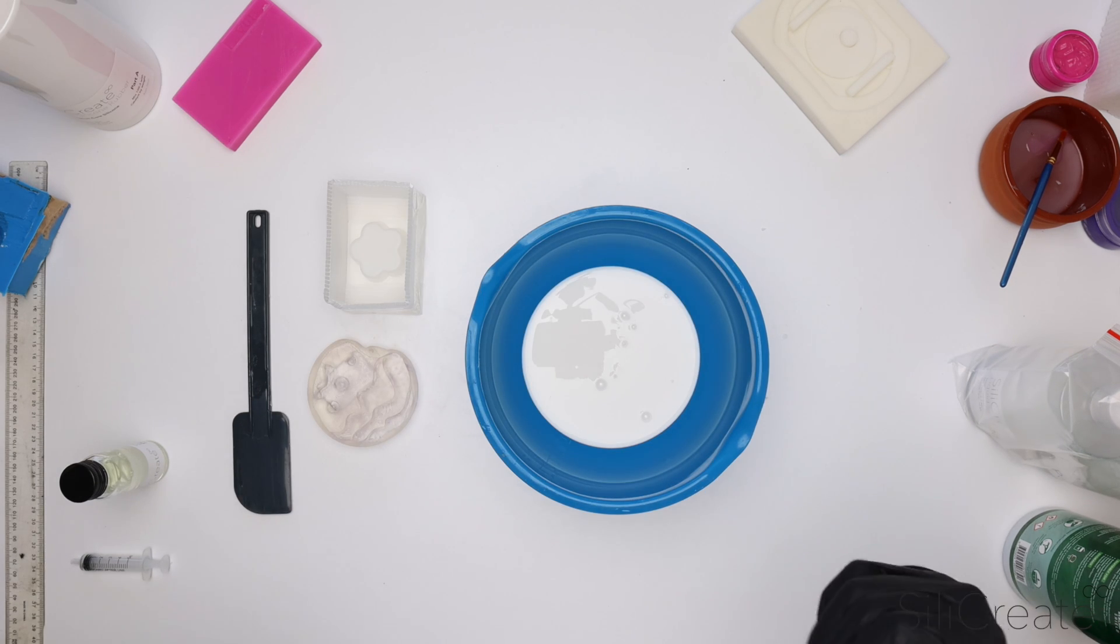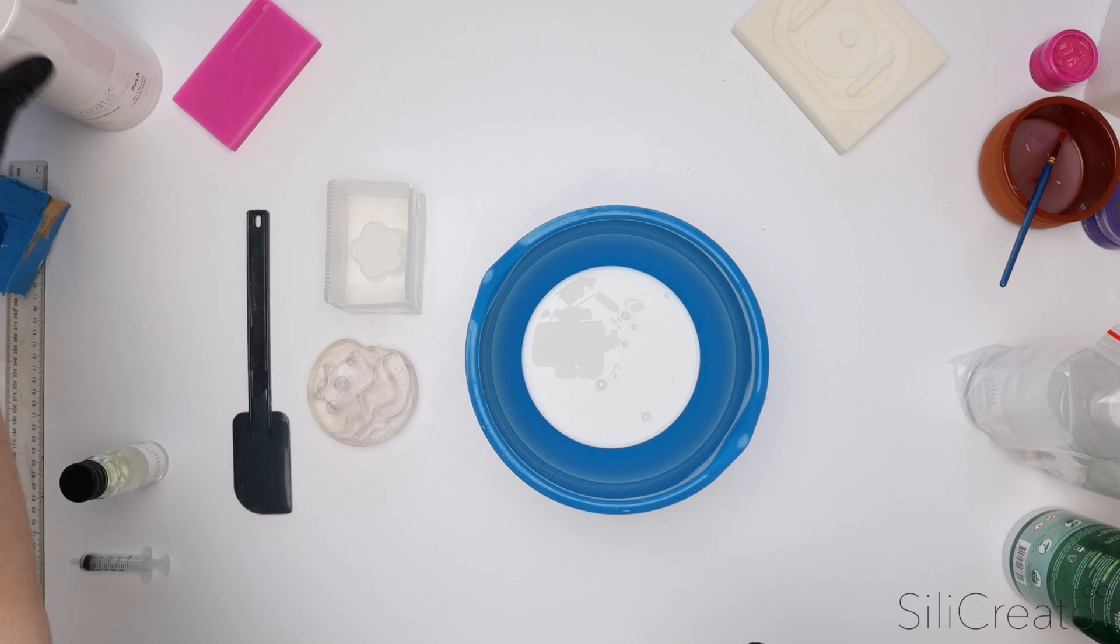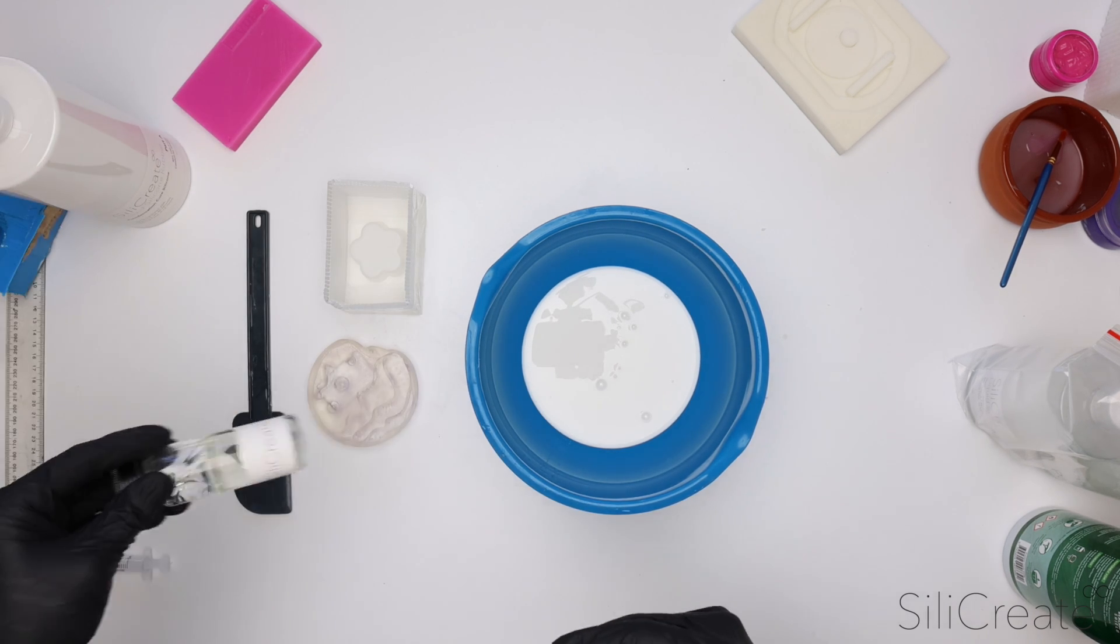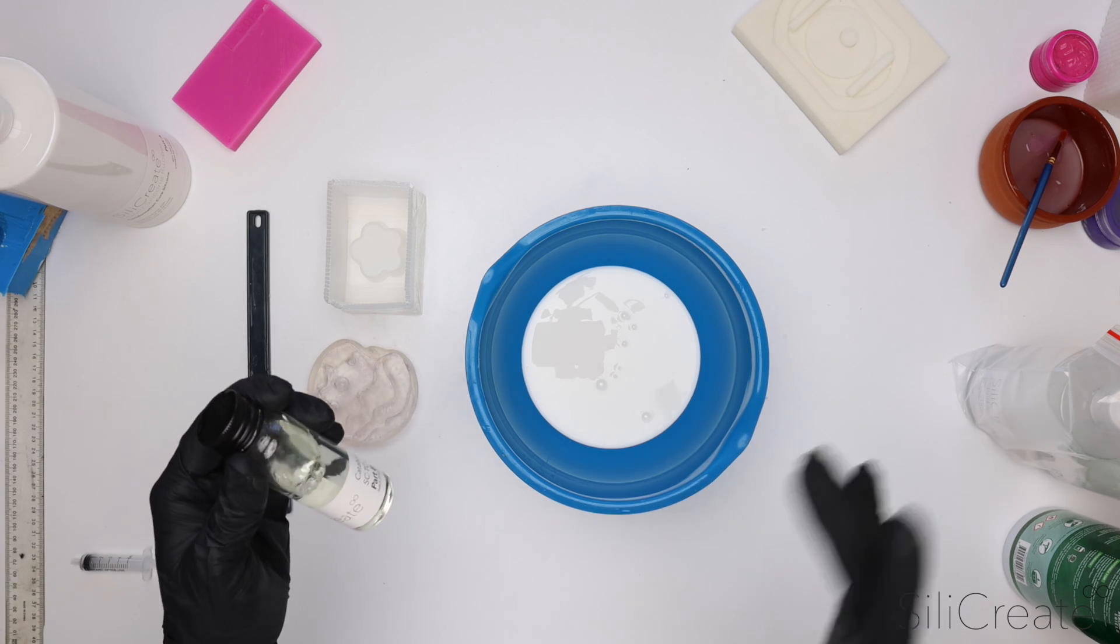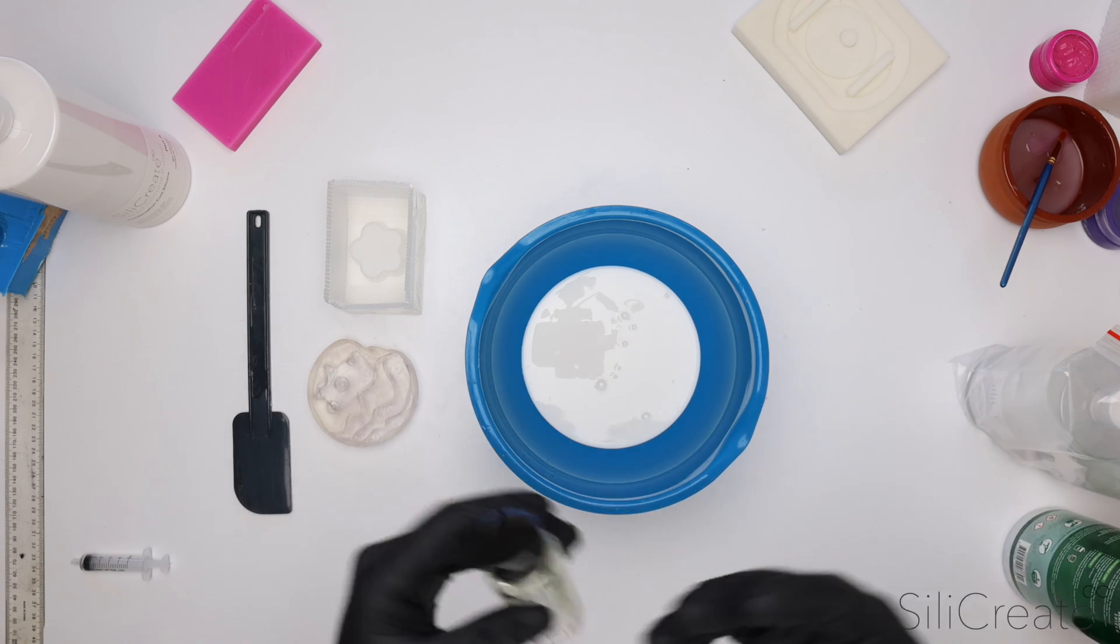Let's go into the general differences in the workflow. With the tin cure, you've got a large amount of the silicon and then you mix it in with a catalyst. Generally the catalyst is mixed in at around three percent, though it depends on the brand and model. It can be anywhere from two to five percent.